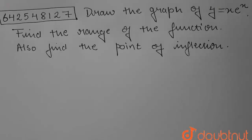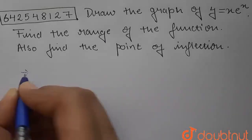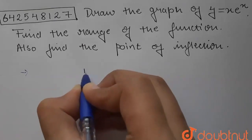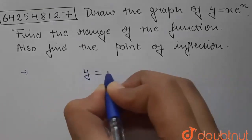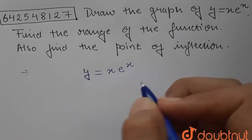Hello students, today's question is: draw the graph of y equals x times e to the power x. Find the range of the function and also find the point of inflection. So let us begin with the solution. In this question, we are given that y equals x into e to the power of x.